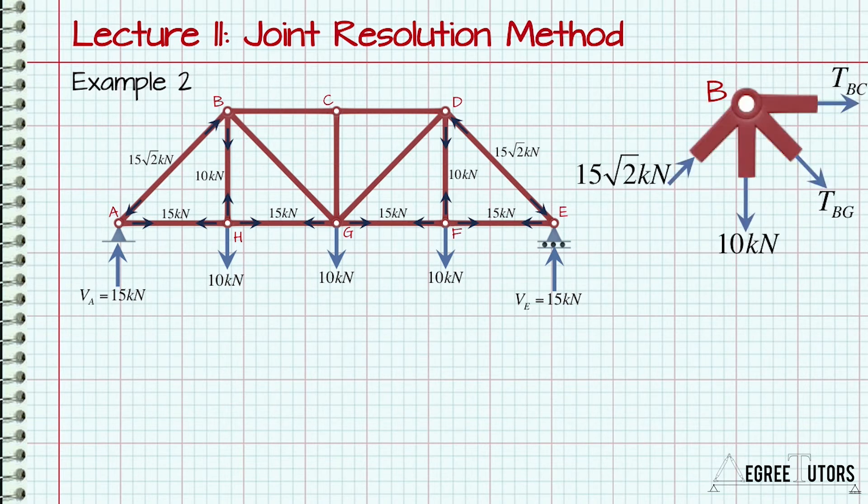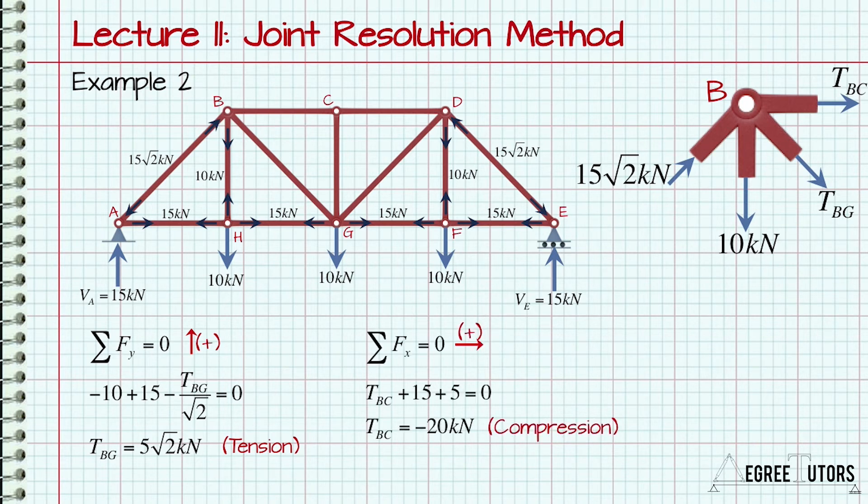Now we can isolate joint B. Equating the sum of the vertical forces equal to zero yields TBG equal to 5 root 2 kN. Evaluating the horizontal force equilibrium equation yields TBC equal to 20kN compression.